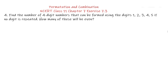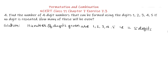Question number 4: Find the number of 4-digit numbers that can be formed using the digits 1, 2, 3, 4, 5, if no digit is repeated. How many of these will be even? We solve like this. Number of digits given are 1, 2, 3, 4, 5 — that is equal to 5 digits.